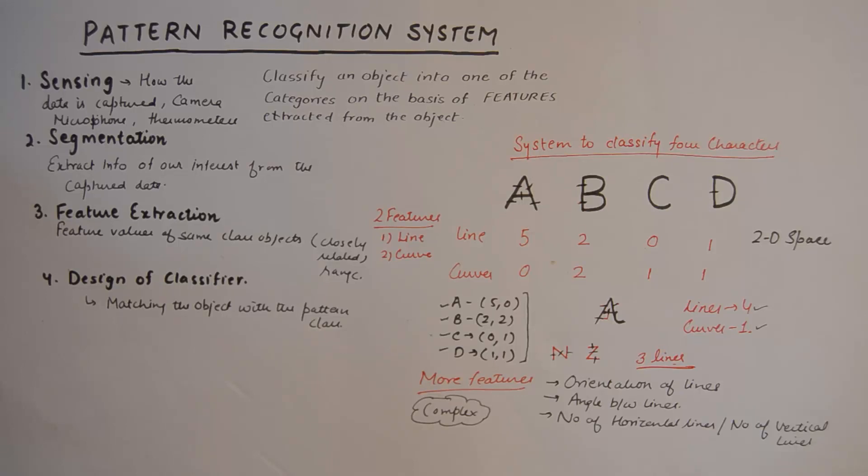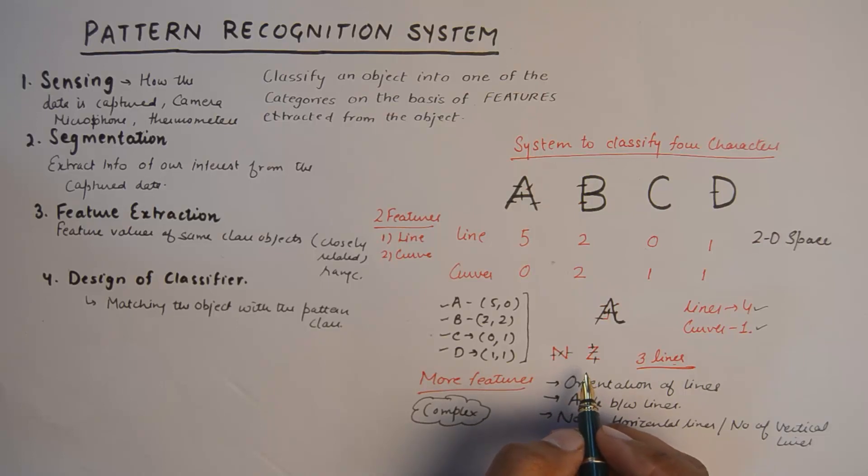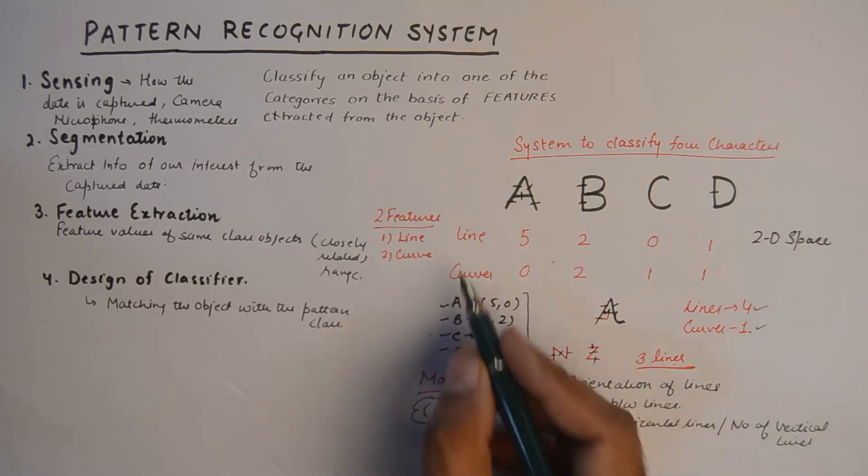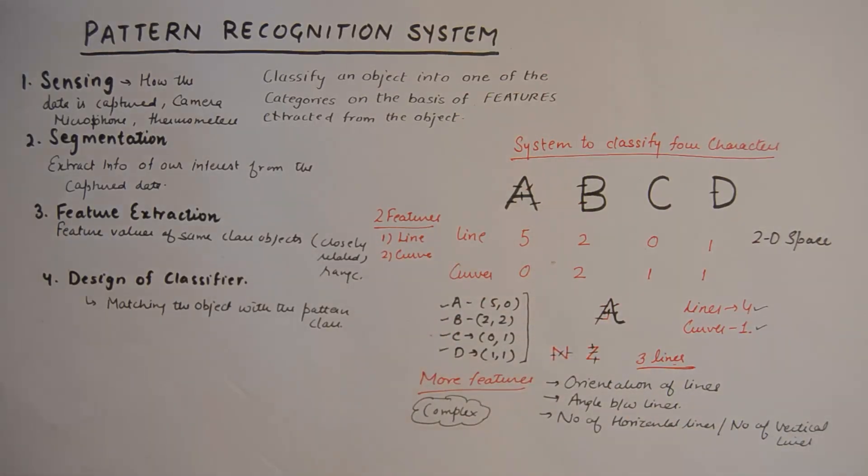And how can we correct that? Now this failure has happened because we were only taking lines and curves, so it will fail to find out the character, to match the character, to classify the character.